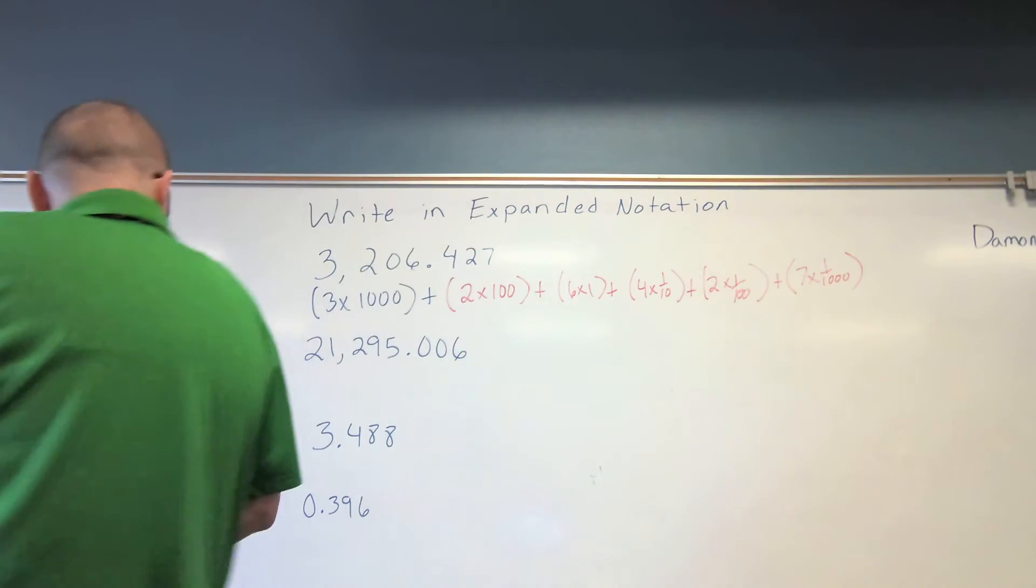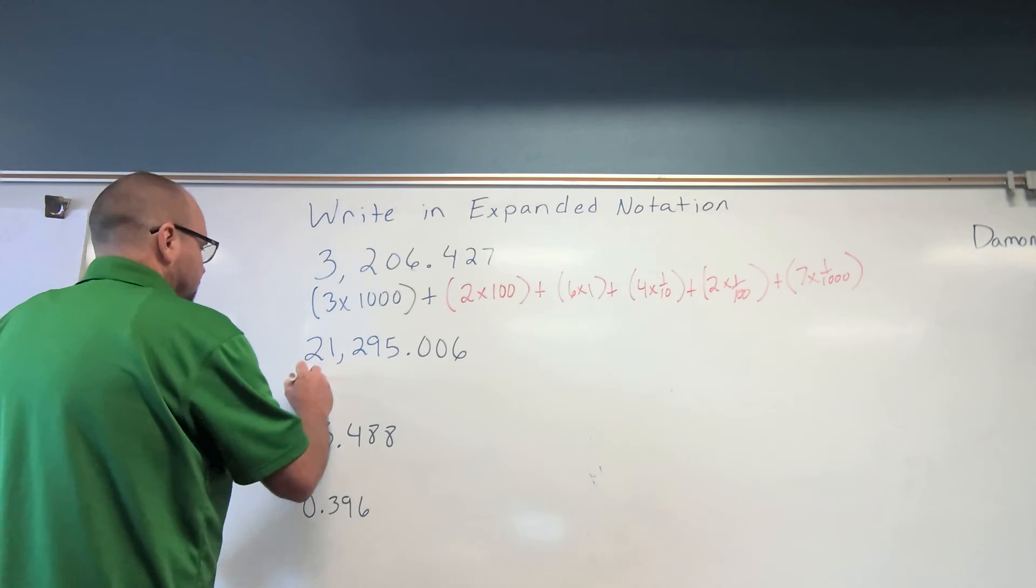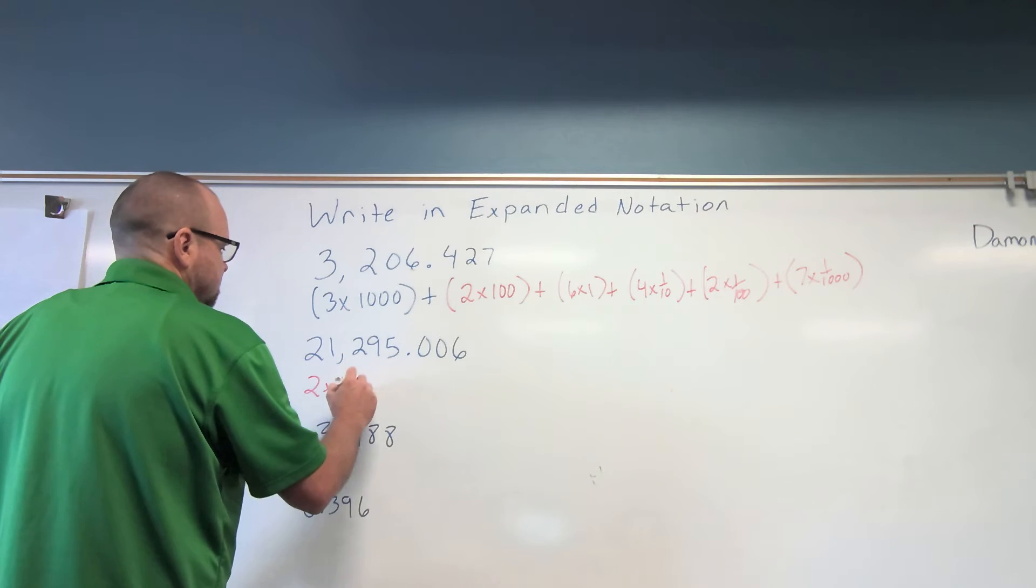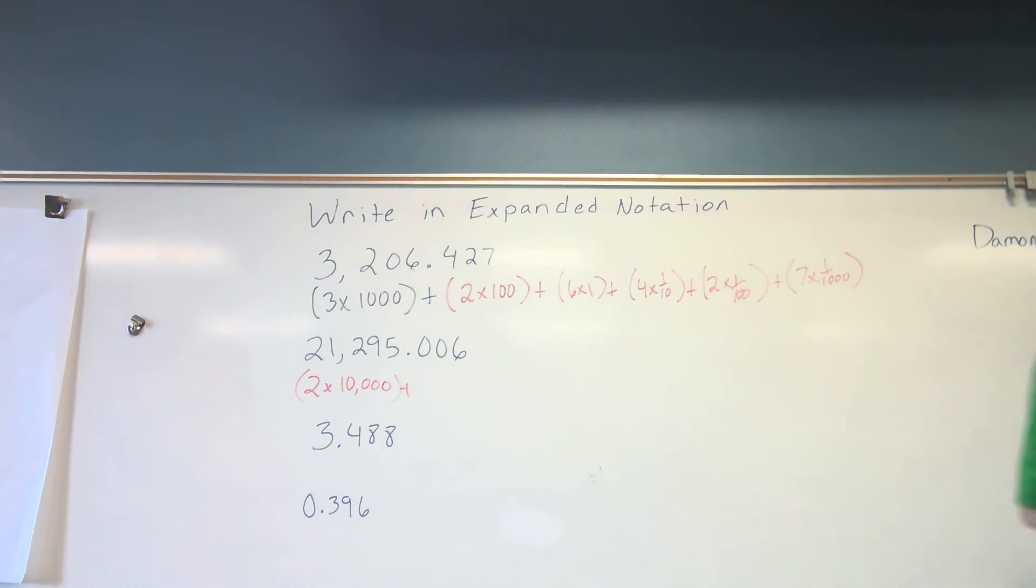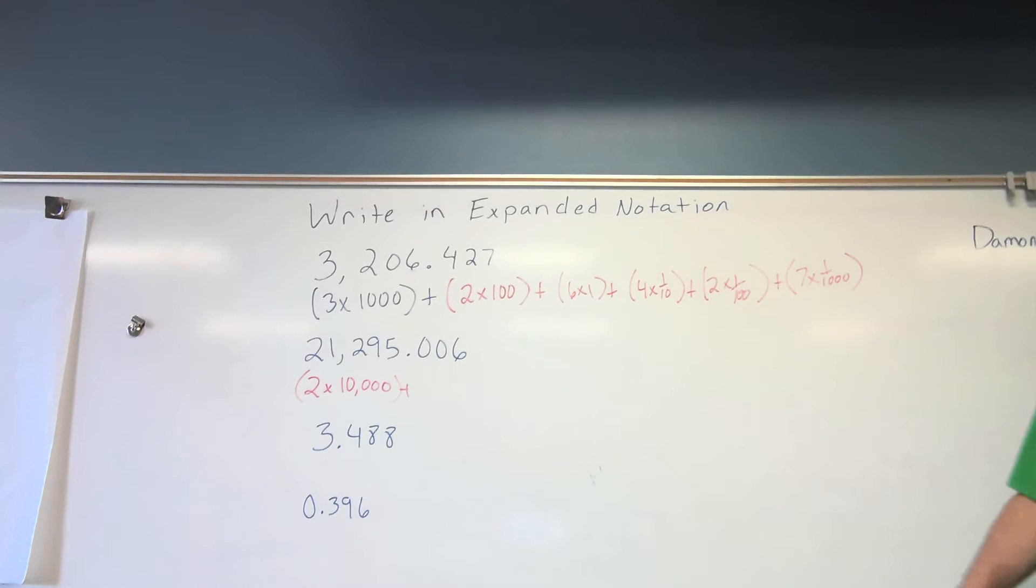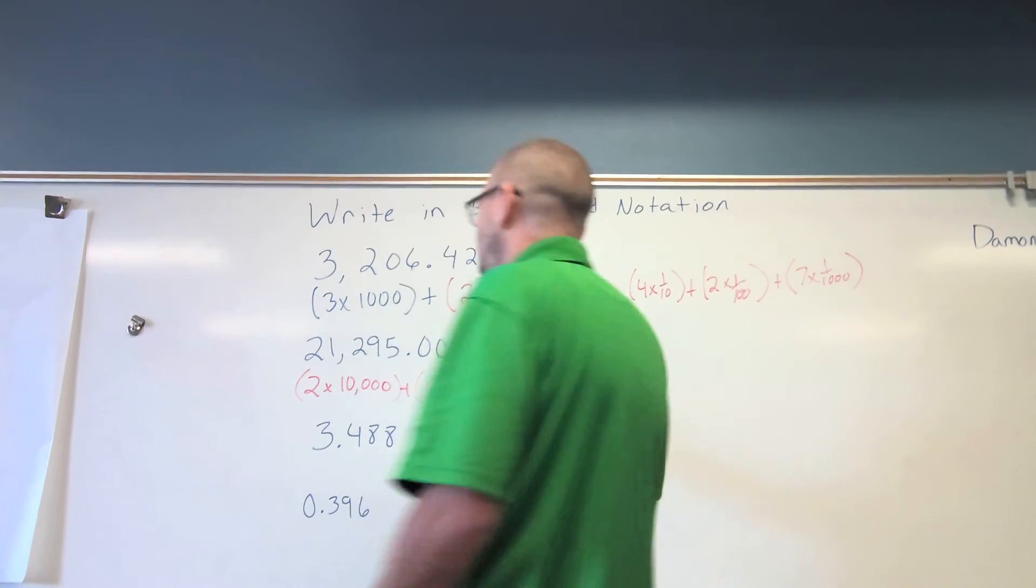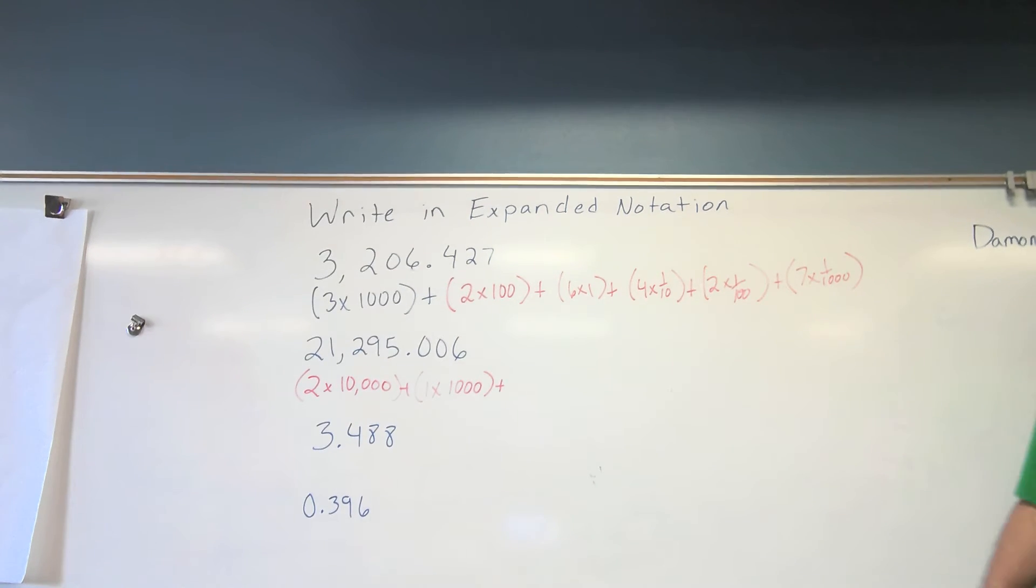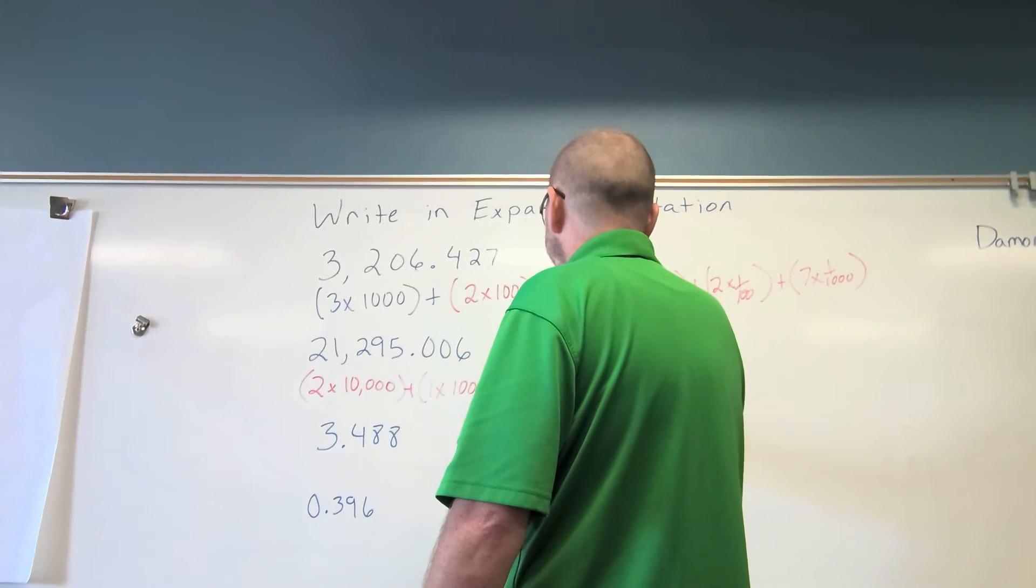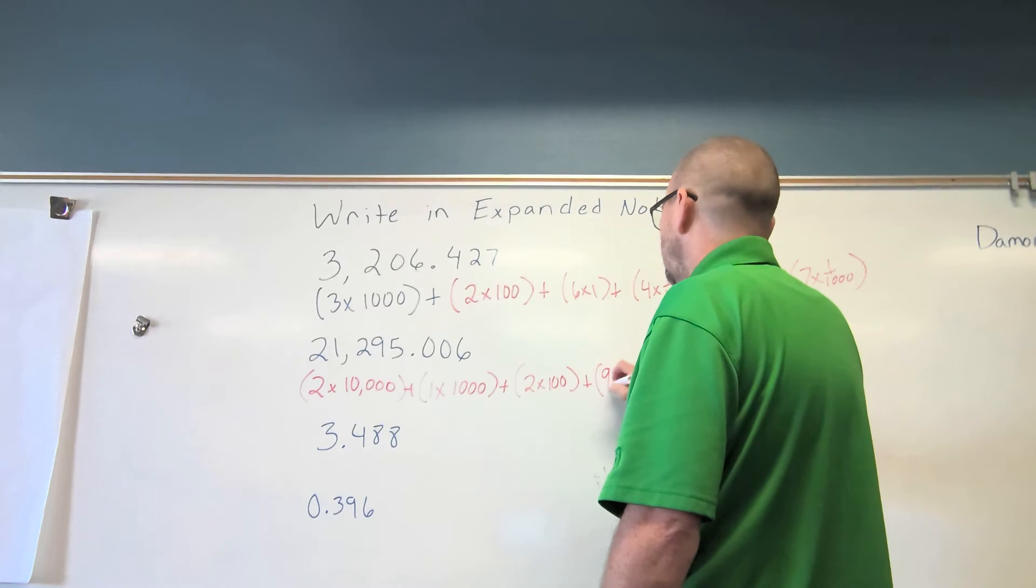Connor, what place value is this two in? The ten thousandths. So I have two times ten-thousandths. Plus, what place value is that one in, Connor? The one-thousandths. The thousandths place. Good. Plus one times. Stop that, please. I'm going to lose my mind. What place value is the next two in, Connor? Two-hundredths. Good. Two times one-hundredth. Plus, what place value is the nine in, Connor? Tens.